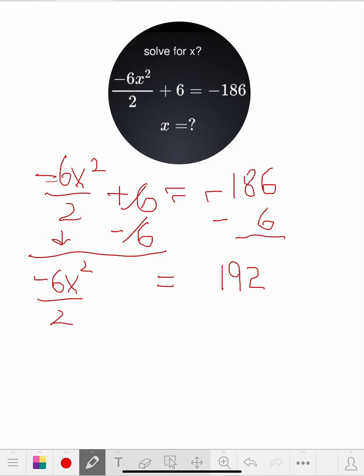Now let's see from here. I want to get rid of the 2 at the bottom, so I multiply each side by 2. When we do one side, we've got to do the other side, so we multiply that by 2.